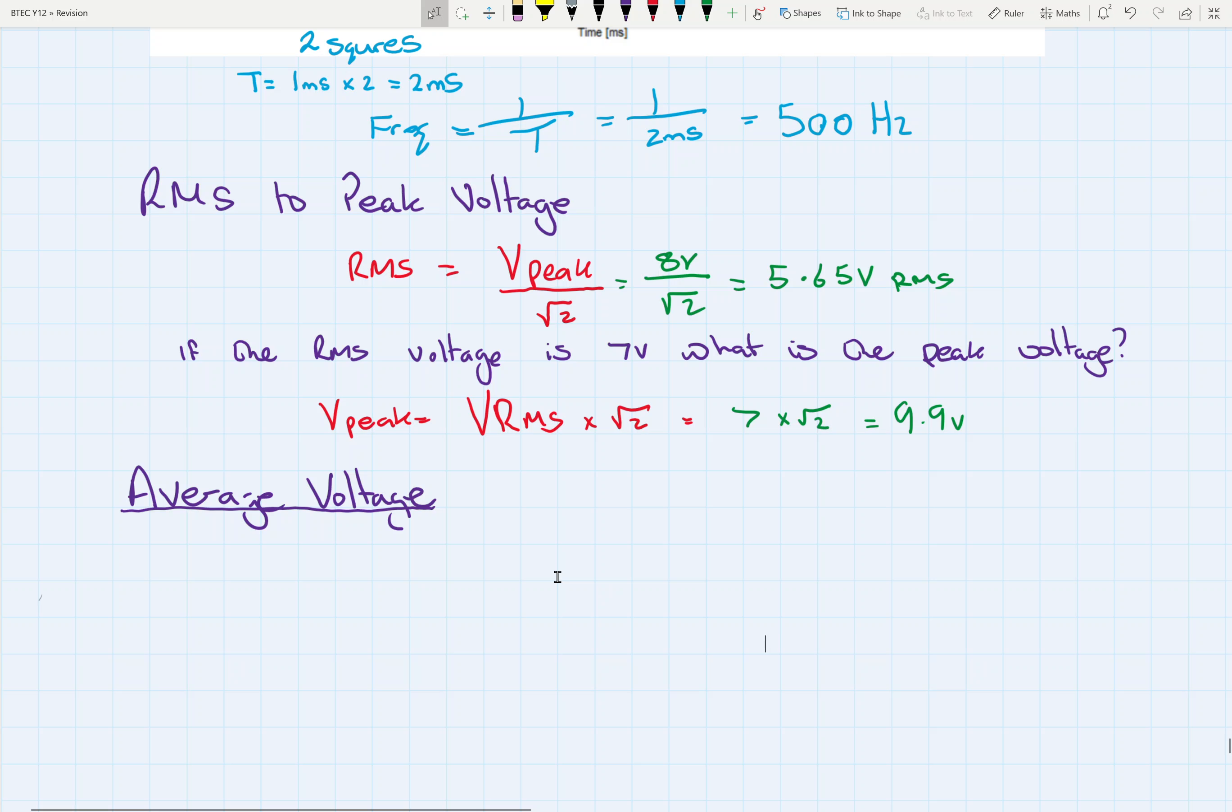Marvellous. So another thing we can work out is the average voltage. We're working at the average voltage for one cycle. The formula we've got is 2 over pi times the peak voltage. So if we use our example, and our voltage peak is 8 volts, then our average voltage is going to be 2 over pi times by 8 volts, which equals 5.1 volts.